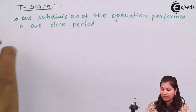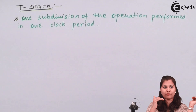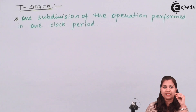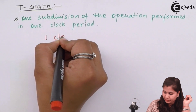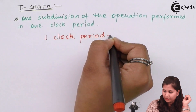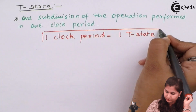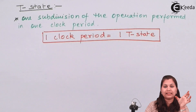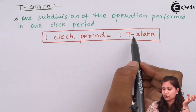A T state is defined as one subdivision of the operation performed in one clock period. The instruction cycle consists of various machine cycles, and machine cycle consists of various T states. So in one machine cycle, some operation is performed in one clock period — that is called the T state. One clock period equals one T state. In place of clock period, we can use the T state. Each machine cycle has six states, and each state consists of two oscillator clock periods, so each state of the machine cycle will consist of two T states.